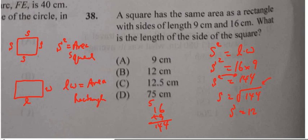So all we have is just S, sorry, equals 12. And so the length of the square, S, is 12. The answer is B.